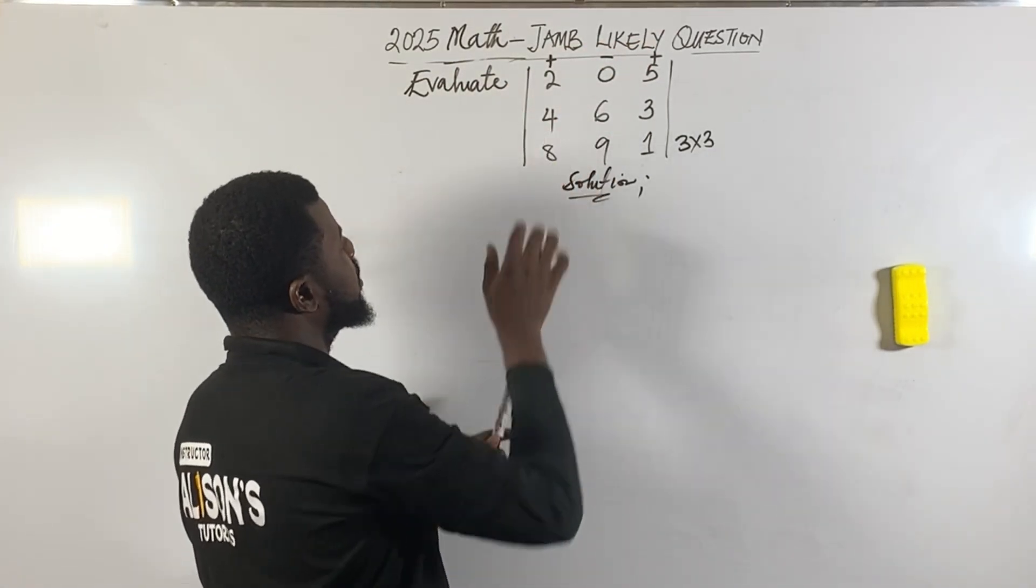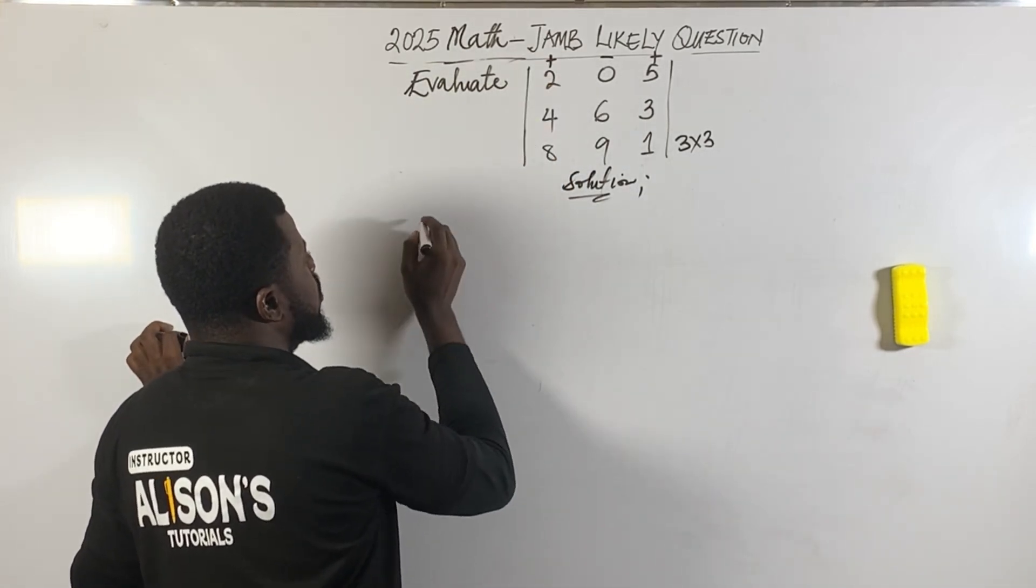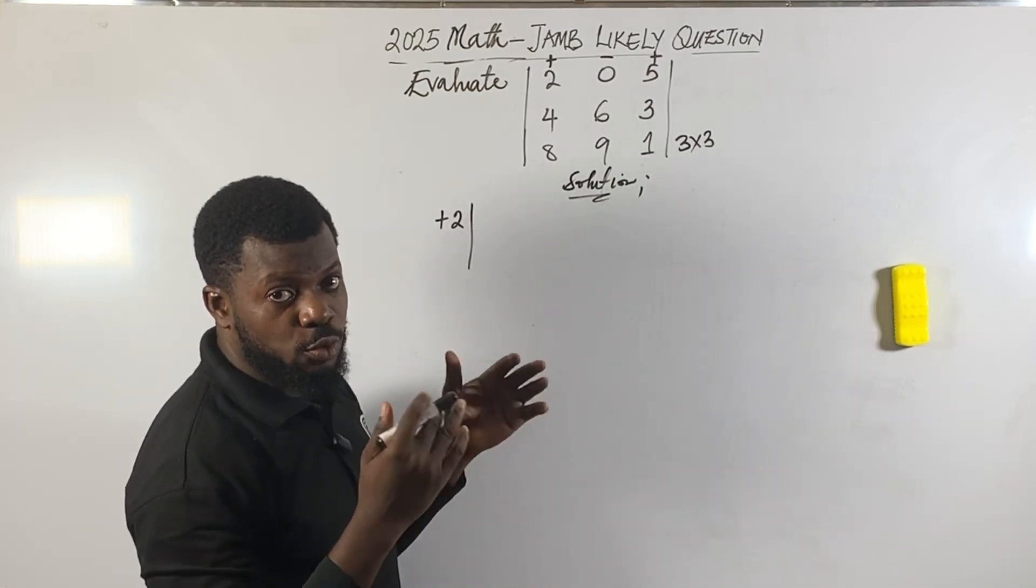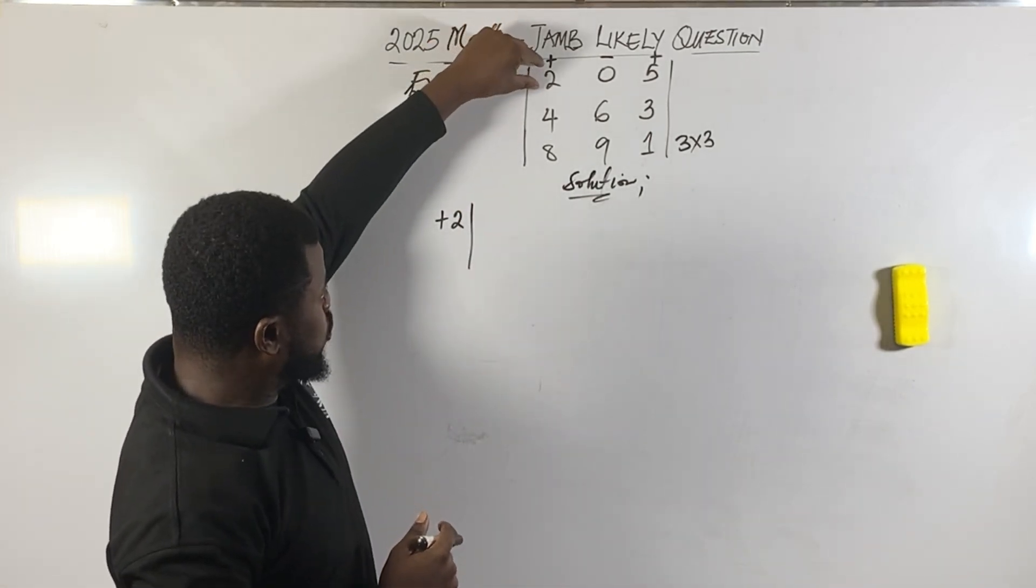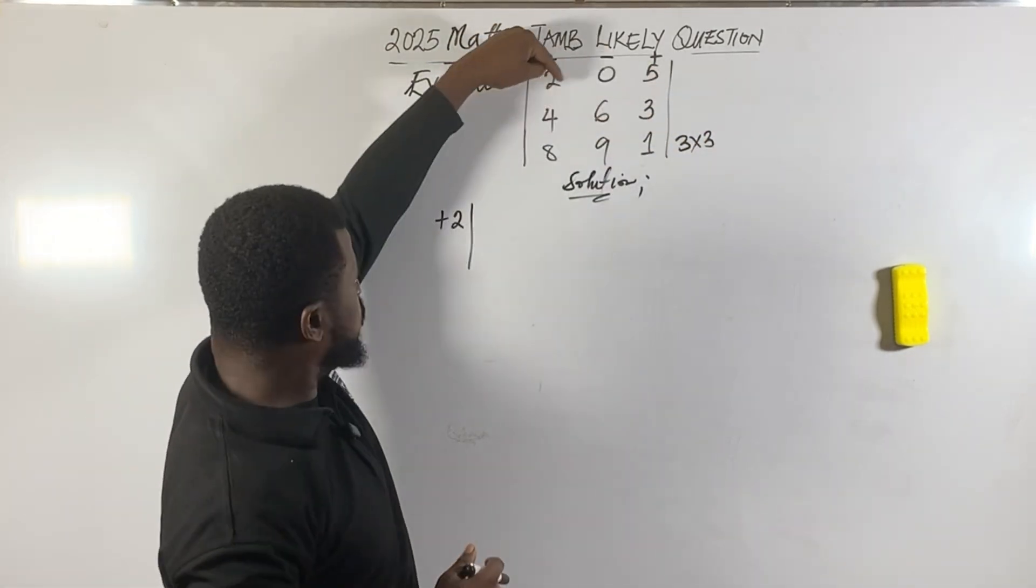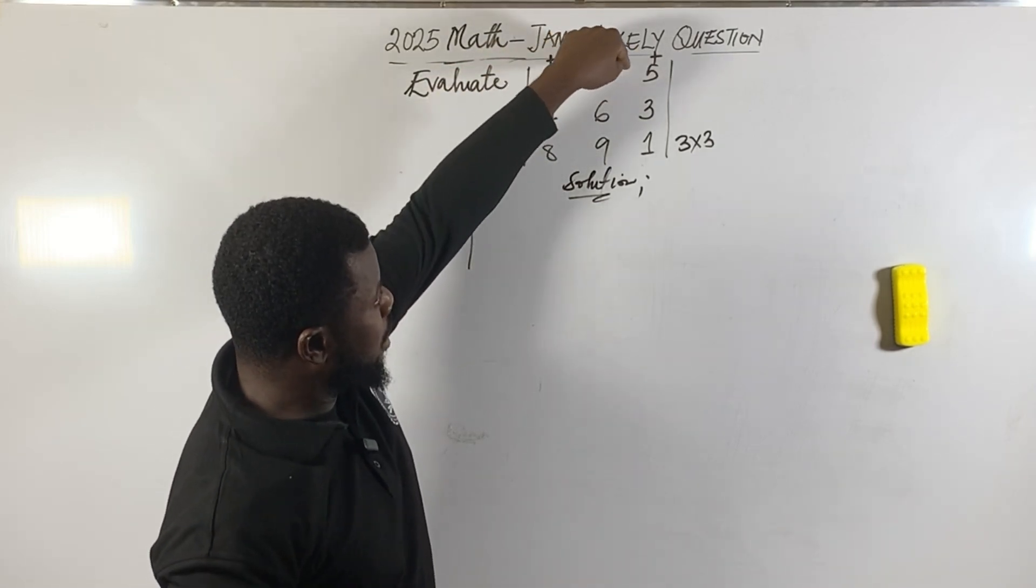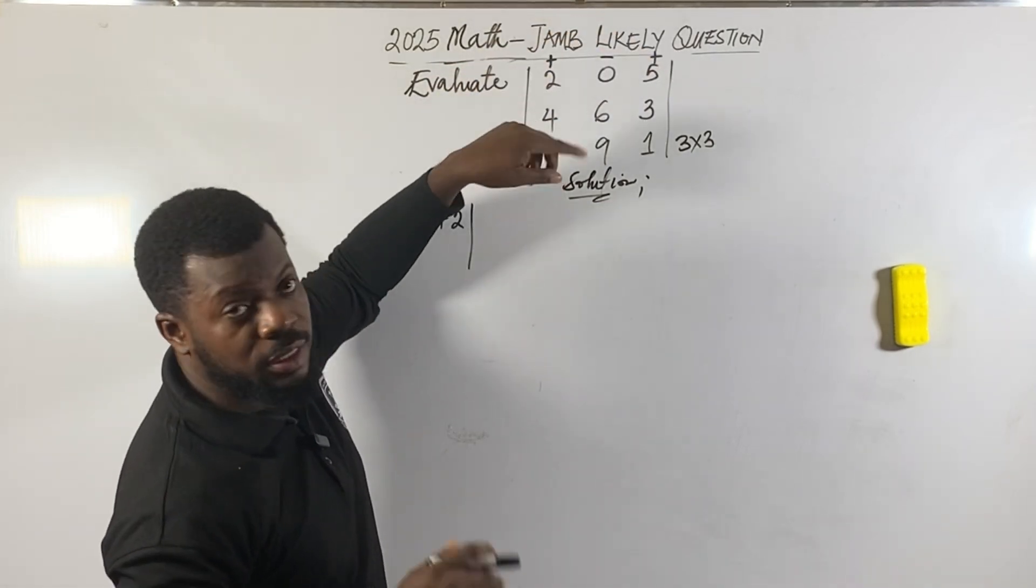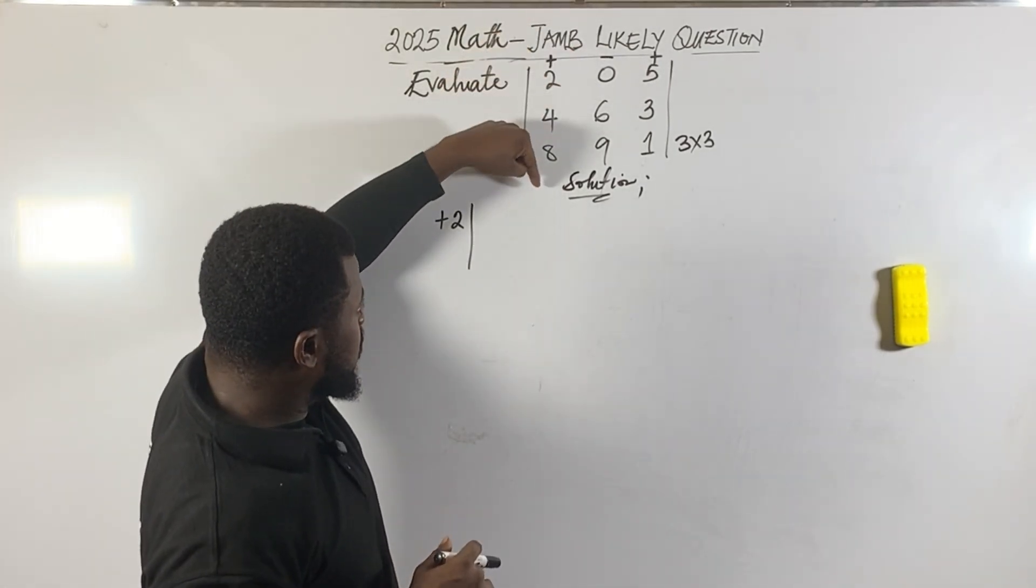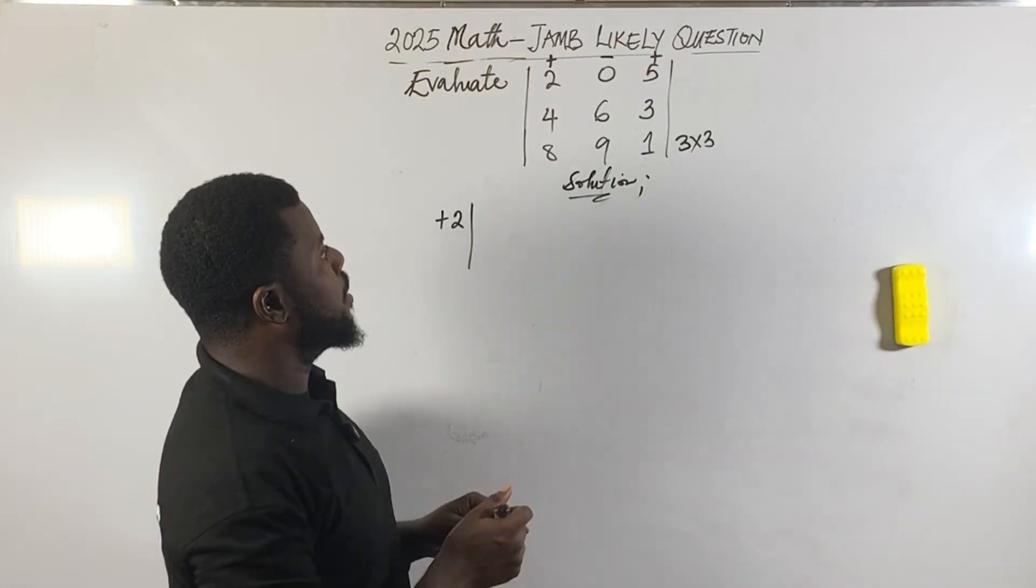To get the answer for this matrix, it's simple. First consider this element - the 2. Watch the pattern I'll use. I'll draw past this particular 2 we selected - draw the same line with this one and the same line with this one. So cancel this row and this column temporarily where the 2 is located.